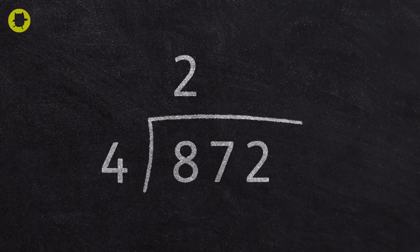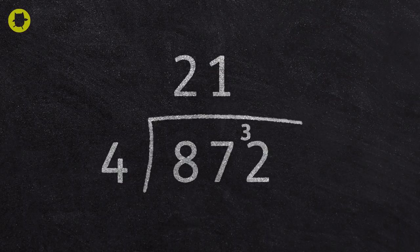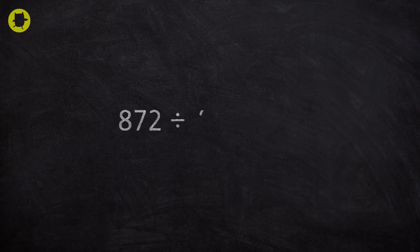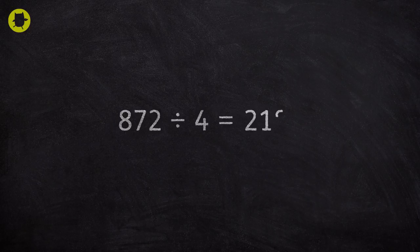So we write the 1 at the top and carry the 3 over. Then we have to ask how many fours are there in 32? The answer is 8, so we write the 8 at the top. So the answer to 872 divided by 4 is 218.